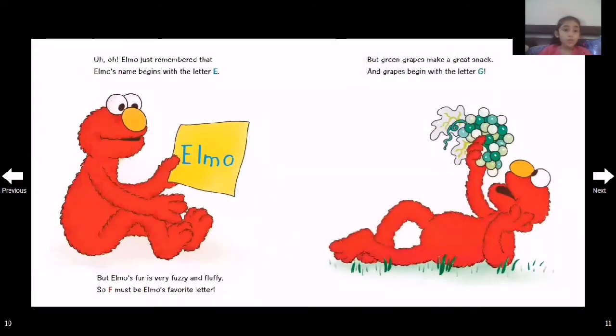Oh! Elmo just remembered that Elmo's name begins with E. But Elmo's fur is very fuzzy and fluffy, so F must be Elmo's favorite letter. But green grapes make a great snack and grapes begin with the letter G.